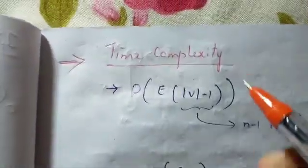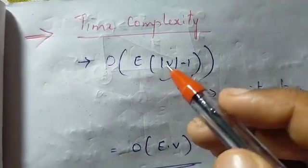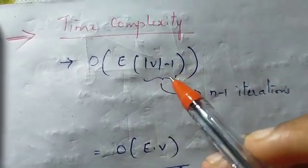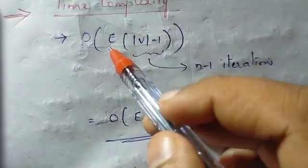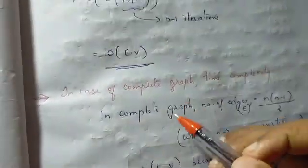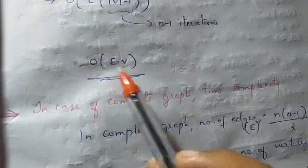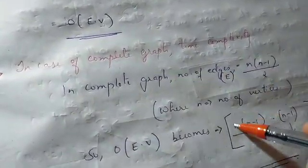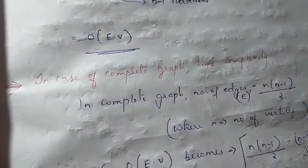Let's analyze the time complexity. Bellman-Ford runs n minus 1 iterations, and in each iteration it processes all edges. So the time complexity is O(E × (V-1)). For a complete graph, the number of edges is larger, so we calculate accordingly.